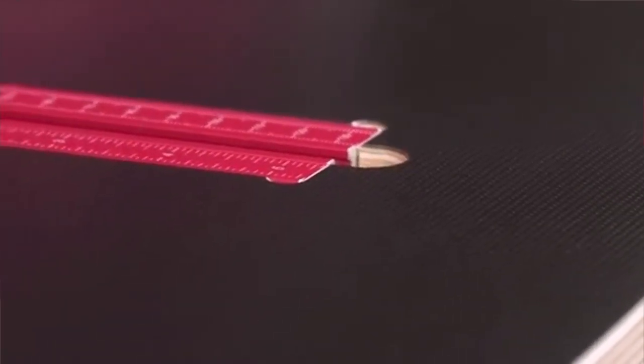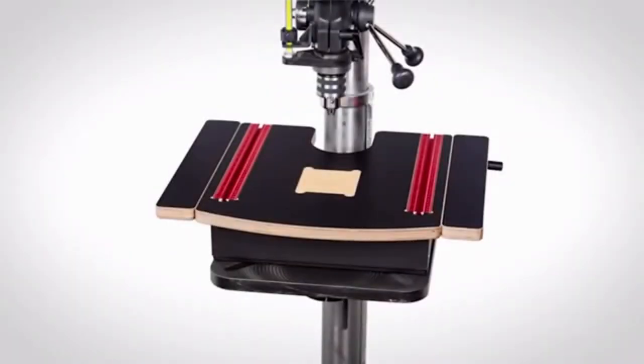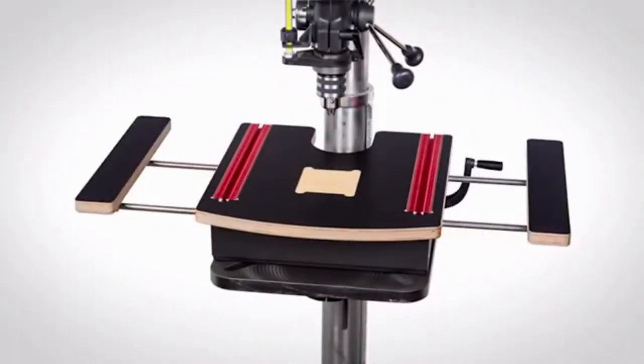The table itself is made from full one-inch thick Baltic birch plywood with black micro-dot laminate on both the top and bottom. The table is designed in three sections, the main central table and wings on each side.